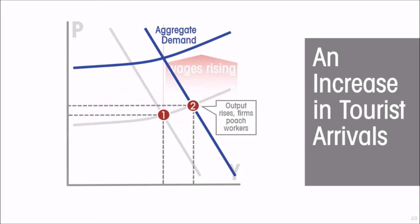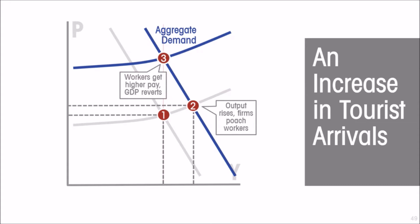Because costs are rising, the prices of goods and services are going to be rising along with it — cost prices are pushing up product prices. As product prices go up, aggregate demand is going to respond to the higher prices of domestic goods and services by reducing the amount of goods and services being demanded, so we move along the aggregate demand curve to a new equilibrium. We move back to the economy's normal capacity, because costs and prices keep rising and aggregate demand keeps falling until we reach the full employment level of output — that represents long-run equilibrium.